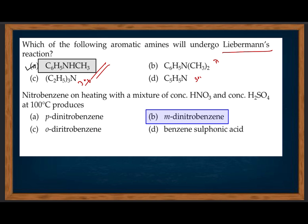Nitrobenzene on heating with a mixture of concentrated nitric acid and concentrated sulfuric acid undergoes further nitration. The nitro group is an electron-withdrawing group, which directs the incoming group to the meta position.